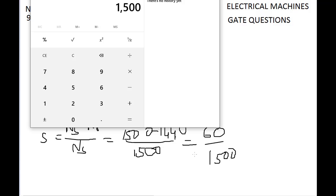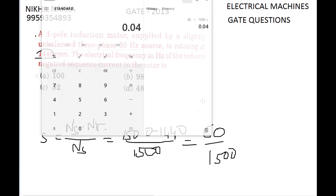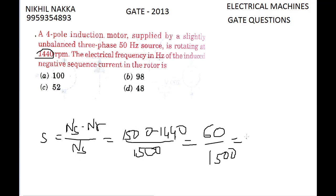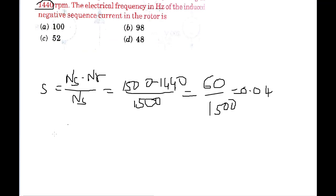60 divided by 1500 equals 0.04. 0.04 is the slip. And frequency of induced current in the rotor is equal to s into f. The rated frequency is 50, therefore 0.04 into 50...